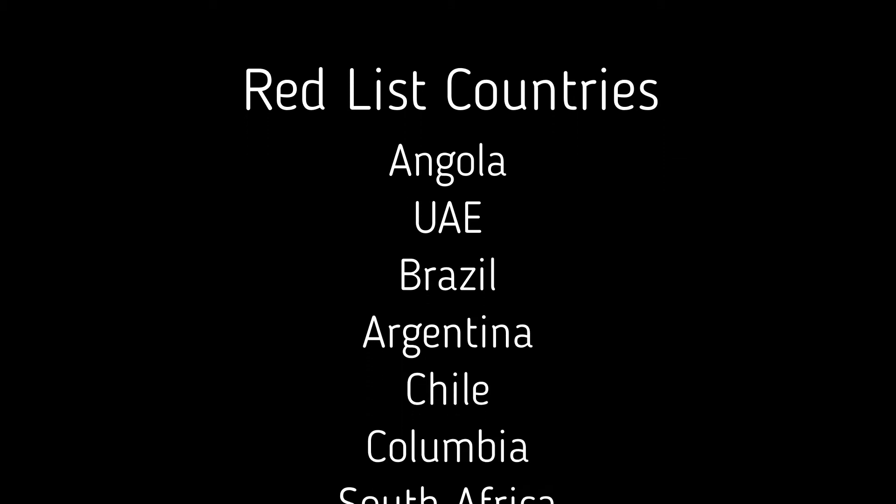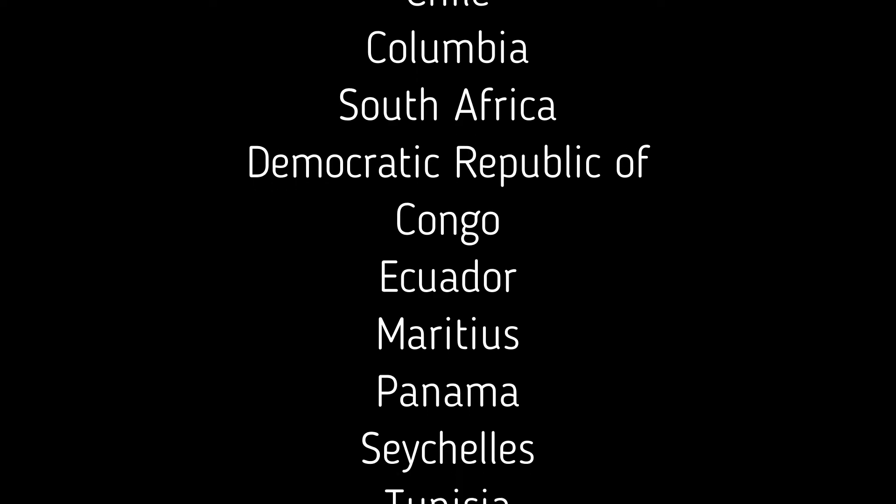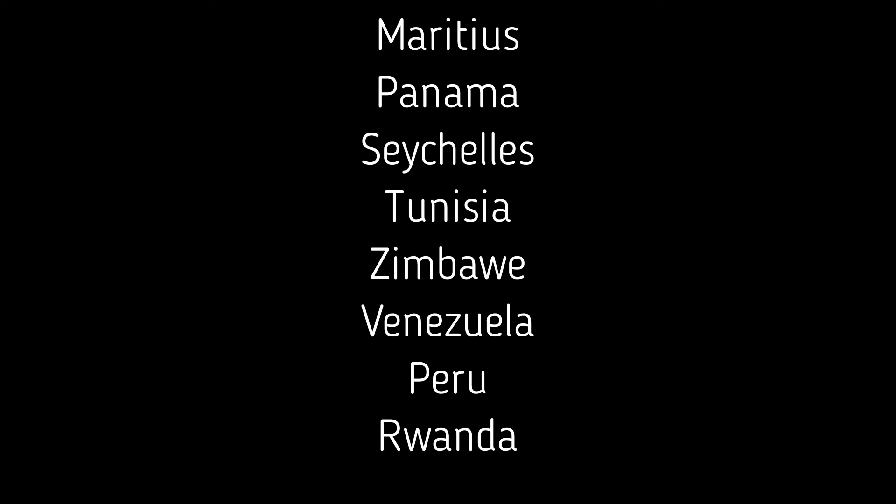Red list countries are those which were previously banned from entering UK. UK citizens and residence visa holders from these countries can now travel to UK, but they must go for institutional quarantine. These countries are: Angola, UAE, Brazil, Argentina, Chile, Colombia, South Africa, Democratic Republic of Congo, Ecuador, Mauritius, Panama, Seychelles, Tunisia, Zimbabwe, Venezuela, Peru, and Rwanda.